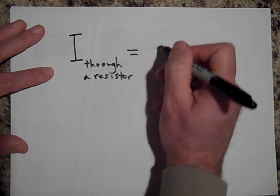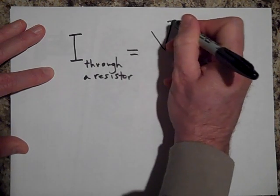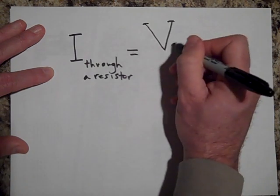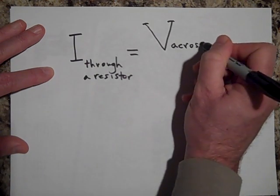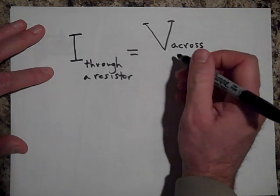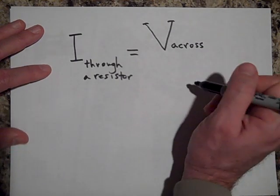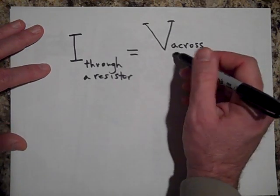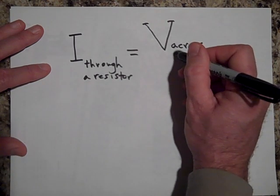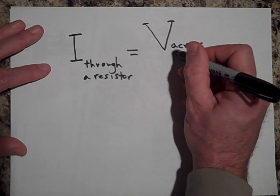That will equal the voltage drop across the resistor. Voltage doesn't flow through a circuit; it is dropped across different elements in a circuit. So the voltage across the resistor...